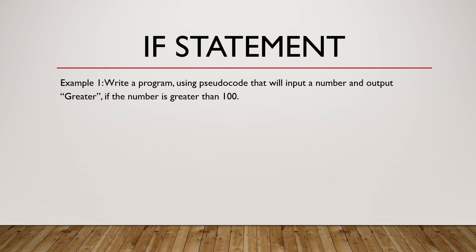Example 1: Write a program using pseudocode that will input a number and output 'greater' if the number is greater than 100. We are going to make use of all our different knowledge from Part 1 and Part 2. The first thing we are going to do is to input a number. Based on previous examples, it's simply: INPUT num.